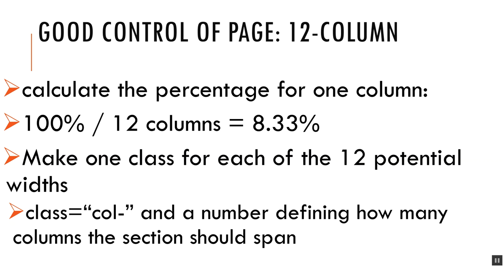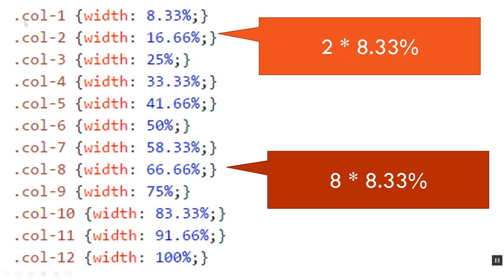We figure out how many columns we want — in this case a 12-column page. The full page is 100%, so we divide by 12, and each column is 8.33%. Then we make one class for each of the 12 potential widths using a naming convention similar to 960GS — starting each class with 'col-' followed by a number representing how many columns that section spans. So .col-1 is 8.33%, and each subsequent class multiplies 8.33 by the column count.